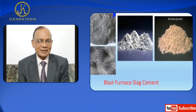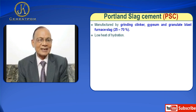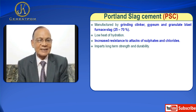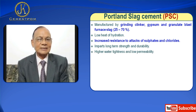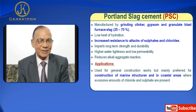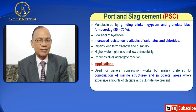Next is Portland Slag Cement, PSC. It is manufactured by grinding clinker, gypsum, and granulated blast furnace slag — 25 to 70%. Blast furnace slag is a byproduct from the steel industry. PSC has additional advantages: low heat of hydration, increased resistance to attack by sulfate and fluoride, long-term strength and durability, higher water tightness and low permeability, and reduction in alkali-aggregate reaction. Applications: used for general construction work but mainly preferred for marine structures and coastal areas where excessive amounts of fluoride and sulfate are present, and also for mass concrete.